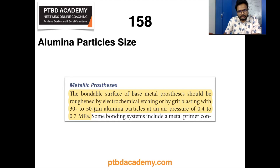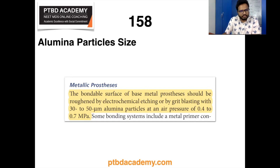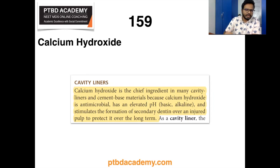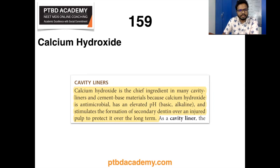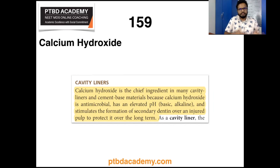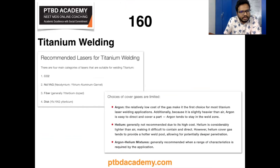Moving on, aluminum particle size is one of the keywords received. Aluminum particles are 30 to 50 microns; three options were also provided — 50, 75, and 150 — so choose the most appropriate one based on the information in Phillips. Regarding calcium hydroxide: it has a high pH which stimulates formation of secondary dentin, it is antimicrobial, and it protects the pulp long-term, hence its use as a cavity liner.